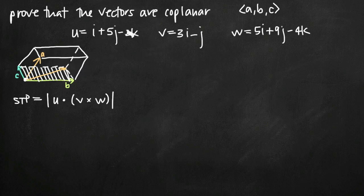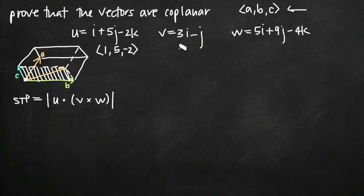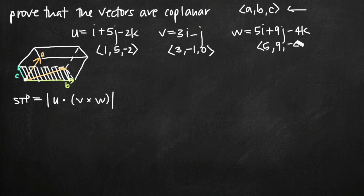First, we transform vectors U, V, and W into component form by taking the coefficients on i, j, and k. Vector U has coefficient 1 on i, 5 on j, and negative 2 on k, giving us (1, 5, -2). Vector V has no k term, so the z-component is 0, giving (3, -1, 0). Vector W gives us (5, 9, -4).